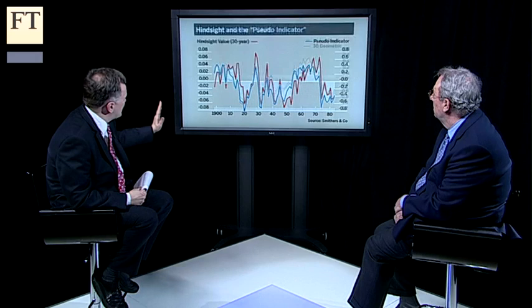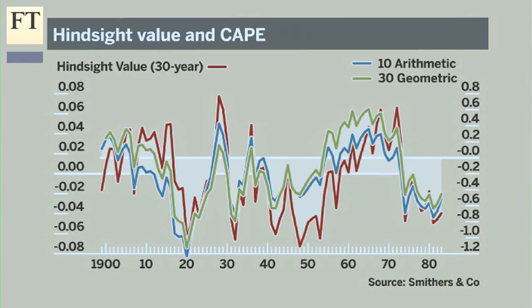It does have problems in theory. Now let's take a look at perhaps one of the measures most talked about recently, which really does seem to work quite well — CAPE, the Cyclically Adjusted Price Earnings Ratio, perhaps most associated in people's minds with Robert Shiller of Yale. Take me through what's happening here.